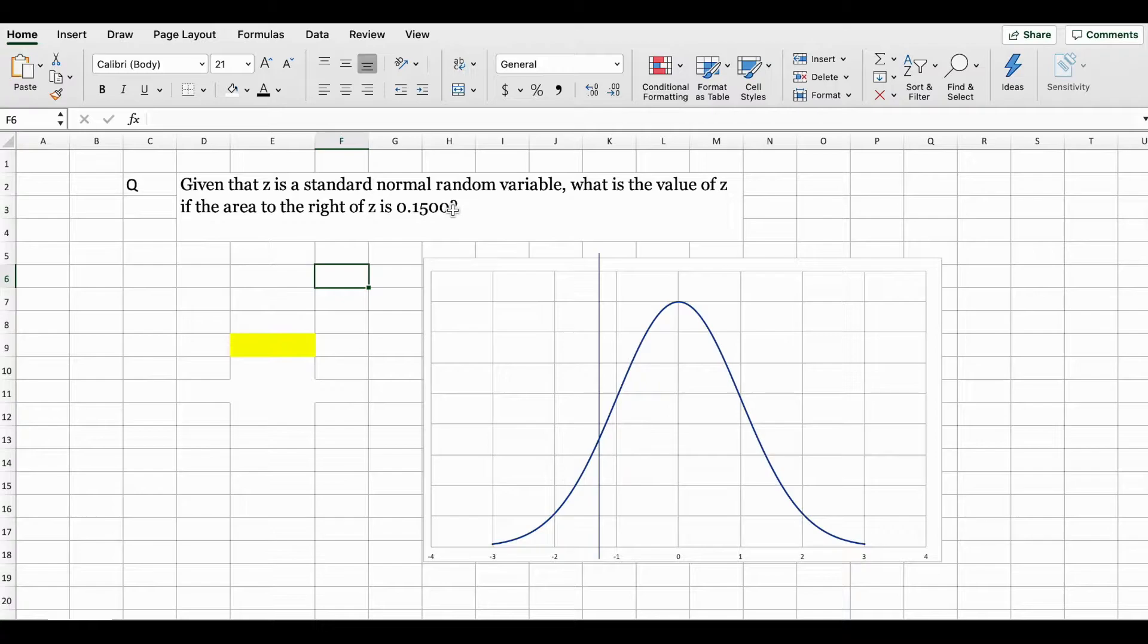So here the probability is already given. The question tells us that this is a standard normal variable and we need to find the value of z, but the probability on the right side of this value of z is 0.1500. So I've created a curve here to demonstrate this.